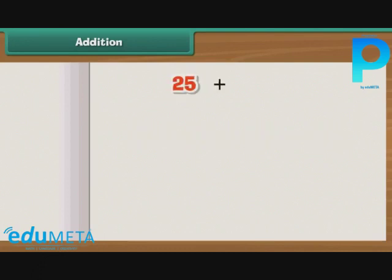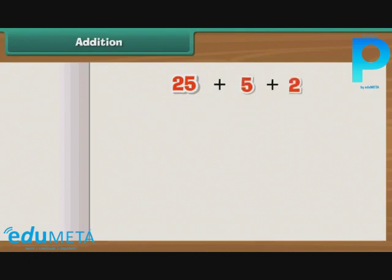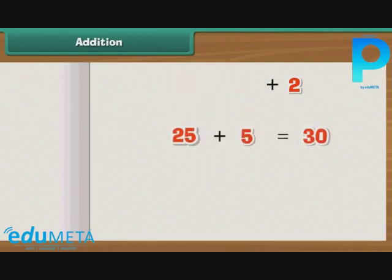For example, to add 25 and 7, we can break the number 7 into two numerals, 5 and 2. We do so as it is easy to add 25 and 5. 25 plus 5 is equal to 30. Then we are left with two numbers, 30 and 2, to add. The result is 32.